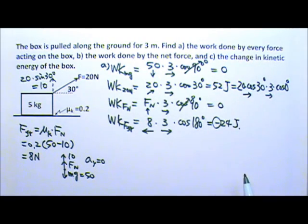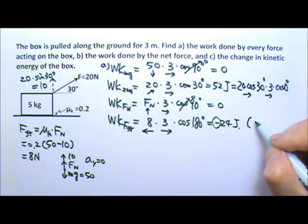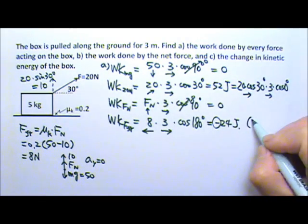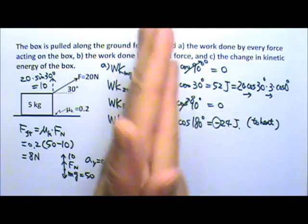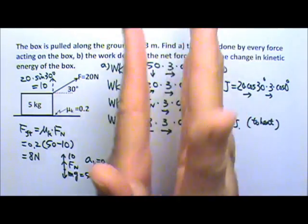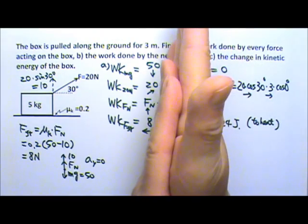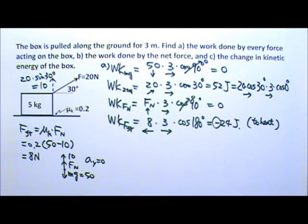The negative work means friction takes 24 joules away from the box. That energy gets turned into heat — when kinetic friction takes energy away, it converts it to thermal energy. That's why in the wintertime if you rub your hands together you can warm them up: friction does negative work on your hands' kinetic energy and turns it into heat.